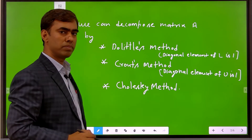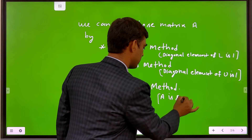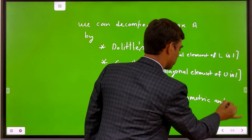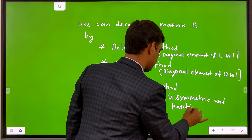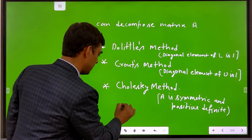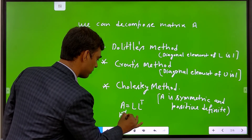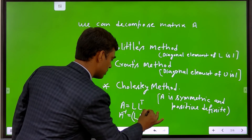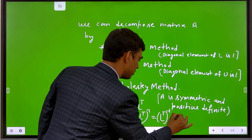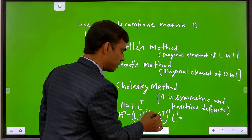We are only able to apply the Cholesky method if A is symmetric and positive definite. In that case, A can be written as A = L × L-transpose. Then A-inverse equals (L × L-transpose)-inverse, which becomes L-transpose-inverse × L-inverse. You may also write this using the property of the lower triangular matrix.